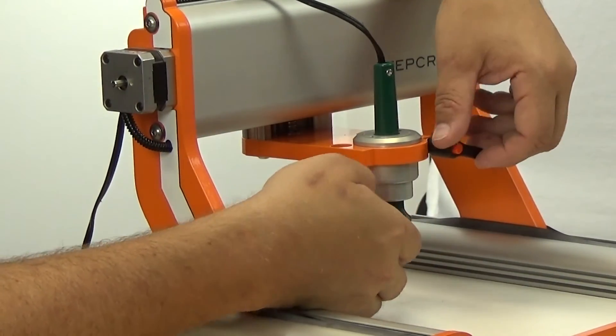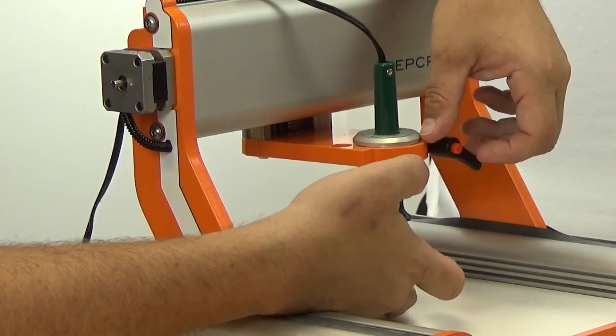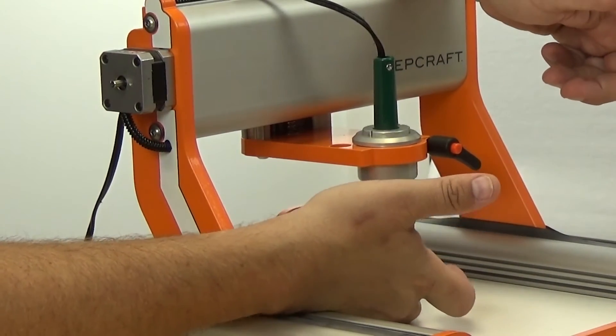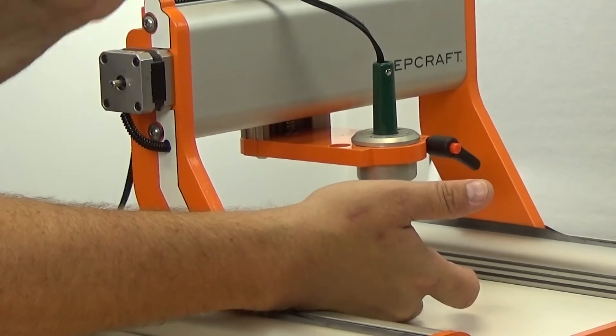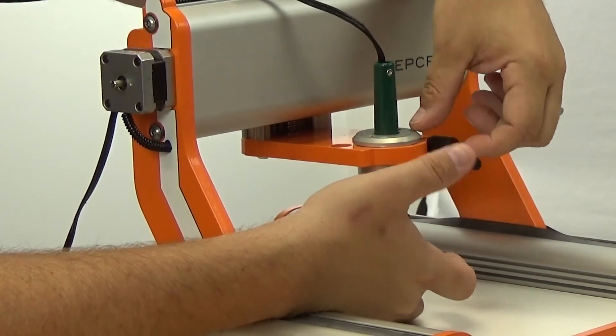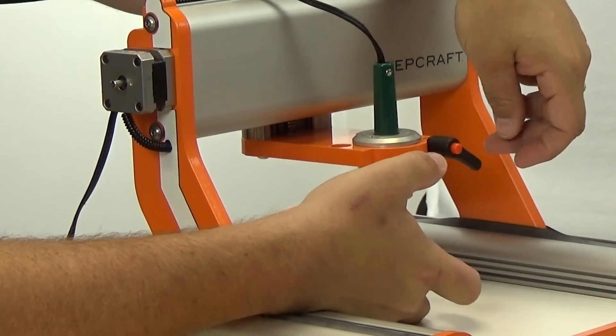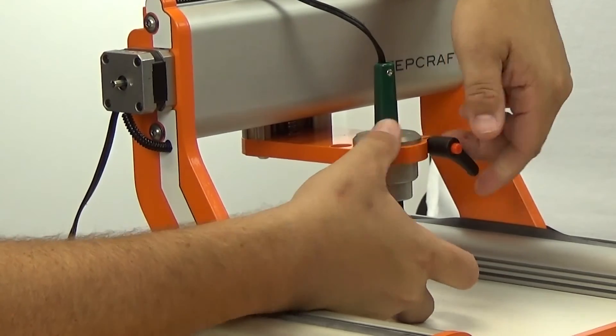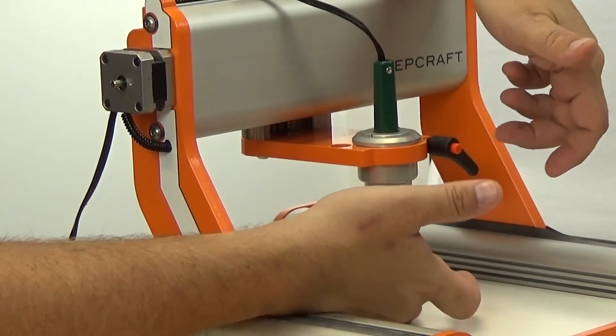What you want to do is be careful to tighten it snug enough so that you can push on the bottom of the pen - be sure it's not plugged in - and it'll move up and down while the holder stays seated properly in the tool holder, just like this.